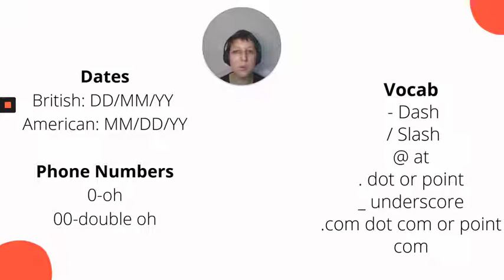In this chapter, we talked about British dates and how they go from smallest to largest. Day being the smallest, month medium, a year is the largest, and American dates just being month, day, year. We also talked about phone numbers and how zero could be O and double zero could be double O.